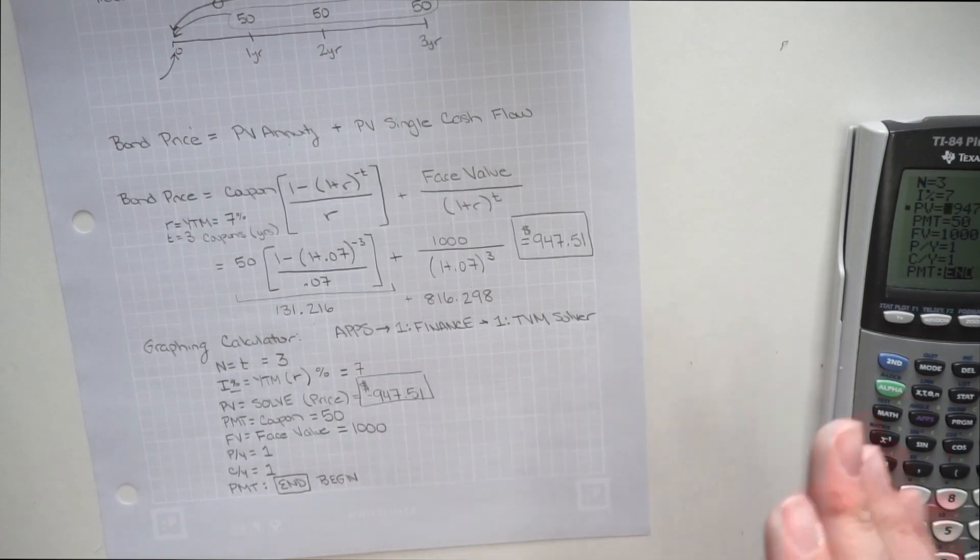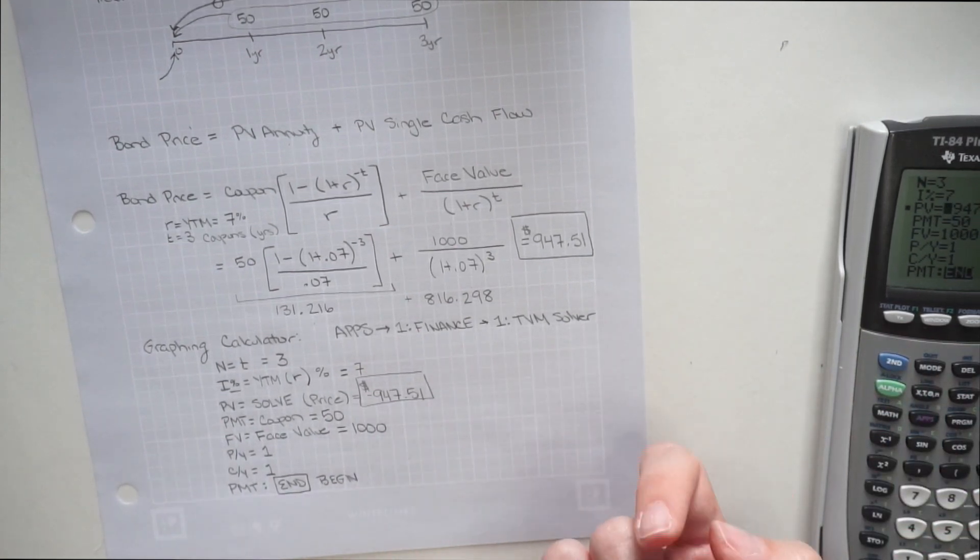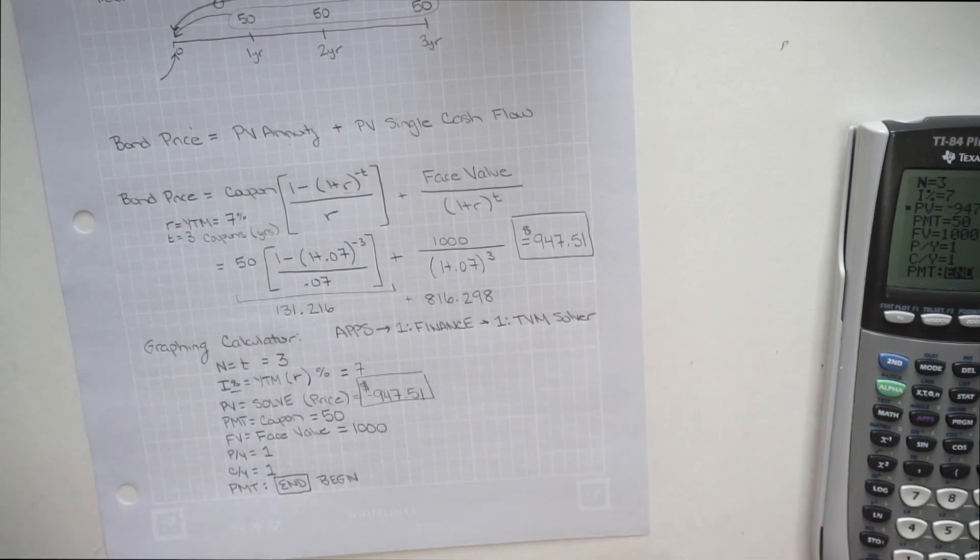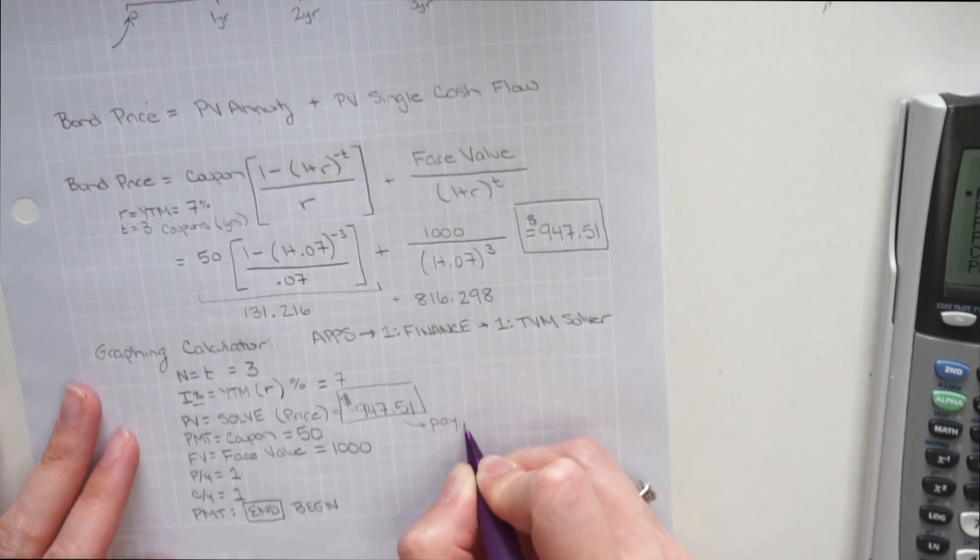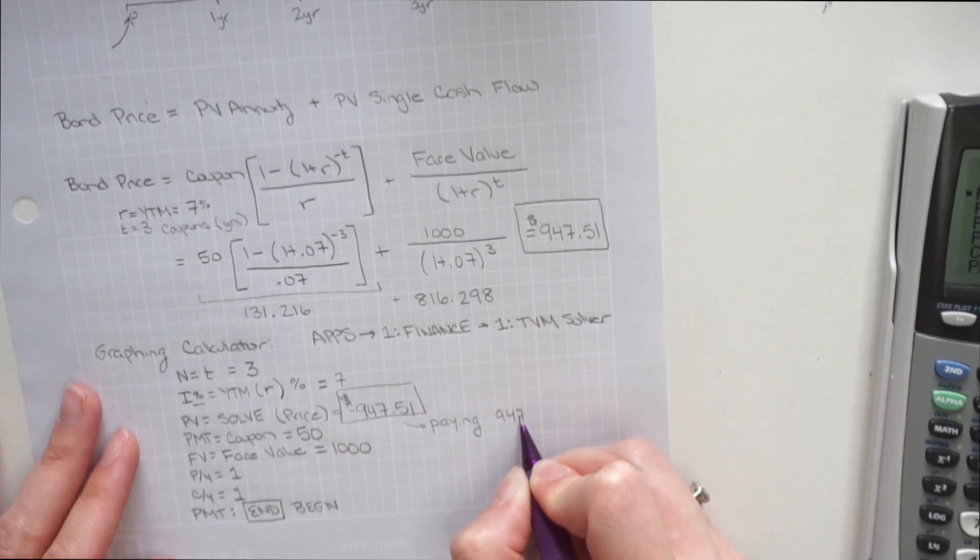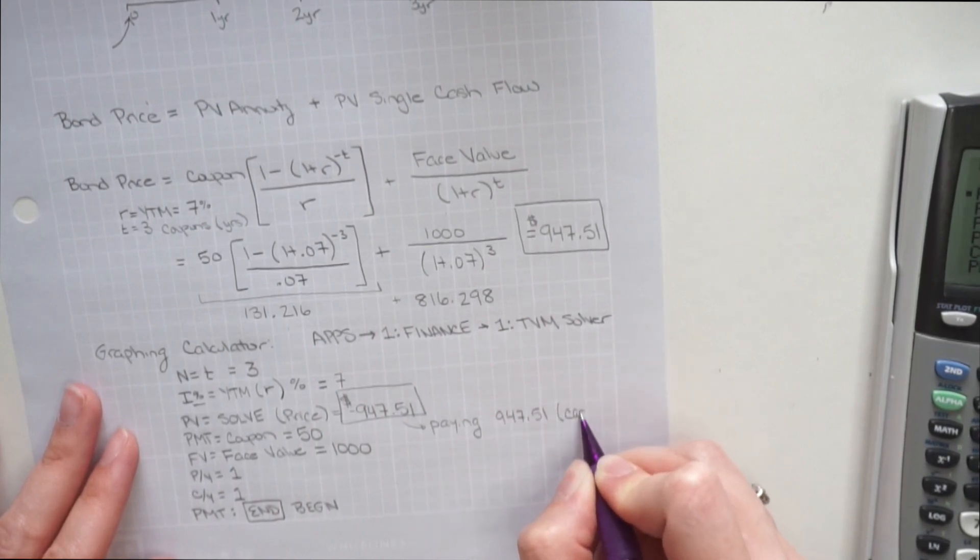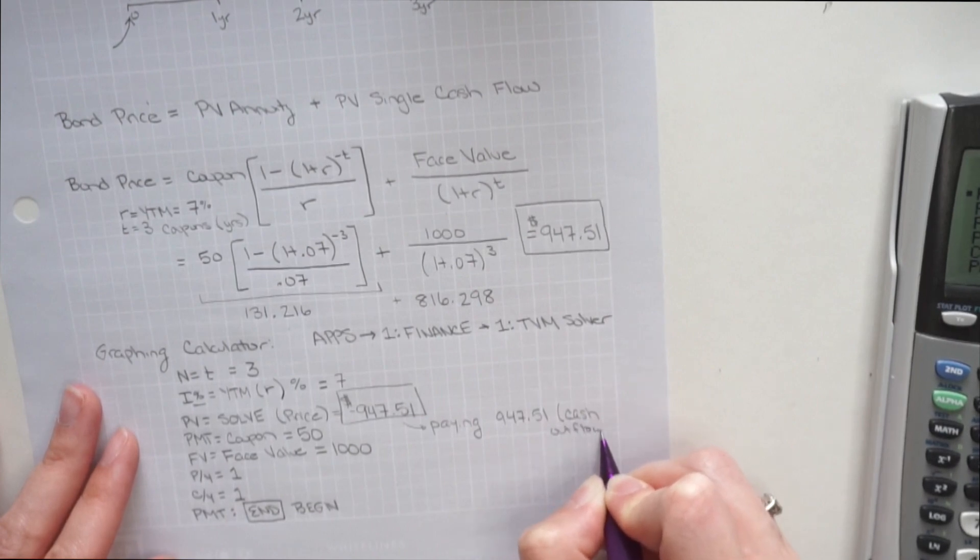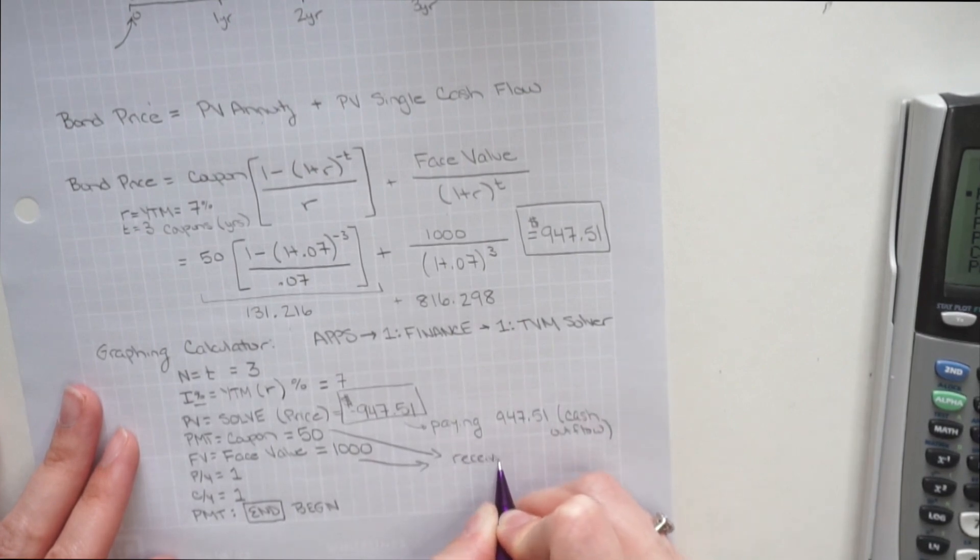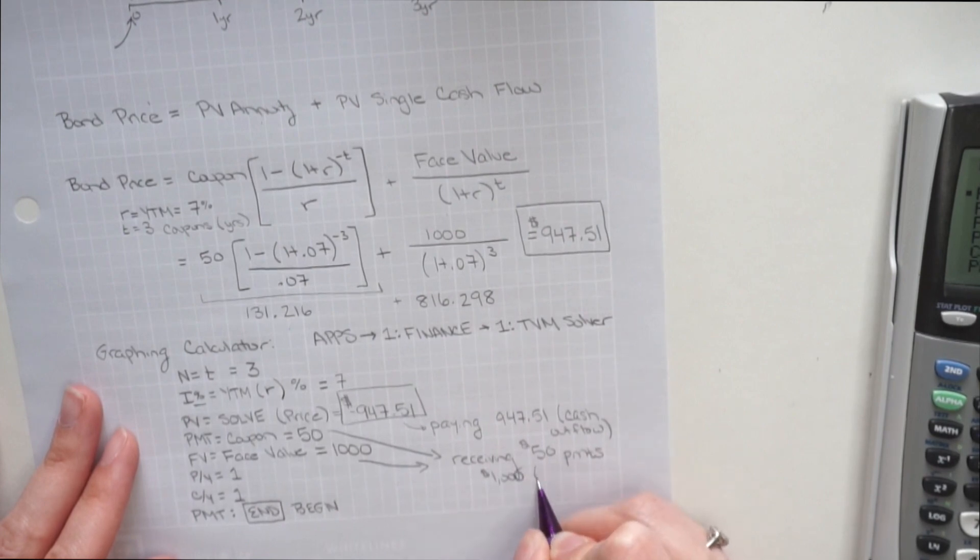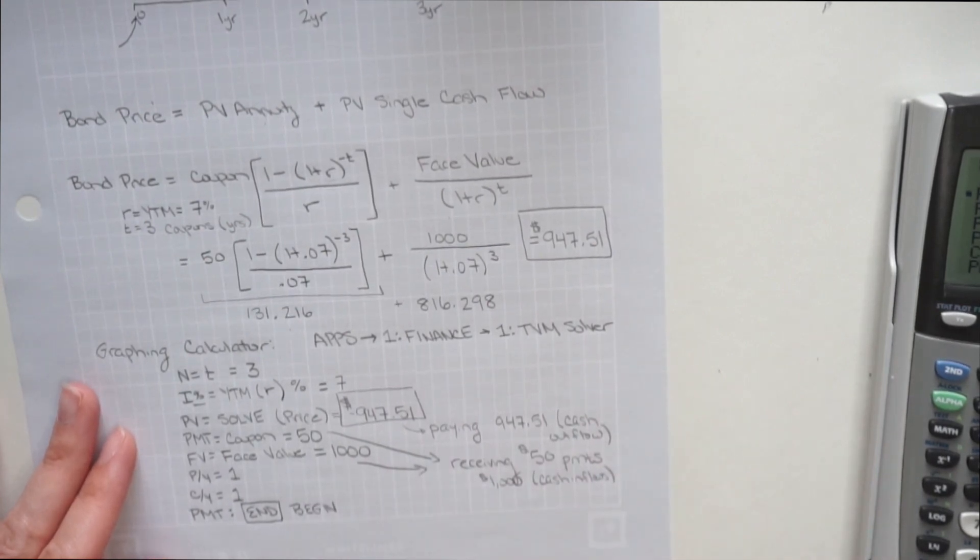The reason for that is both in the calculators and if you solve the same problem in Excel, it's going to think about it as cash inflows and cash outflows. So this is a negative number. So we can think of that as paying $947 and 51 cents. That'd be a cash outflow. Then we're receiving the $50 coupons and the $1,000 face value. So those would appear to us as positive numbers. That's the reason for the negative and the positives.